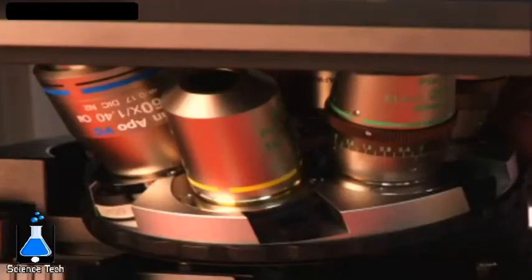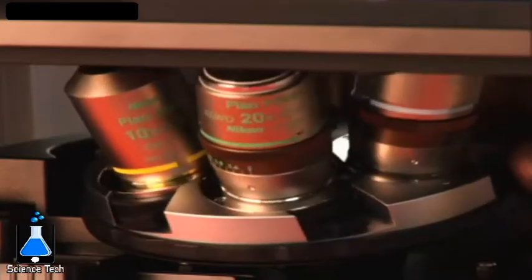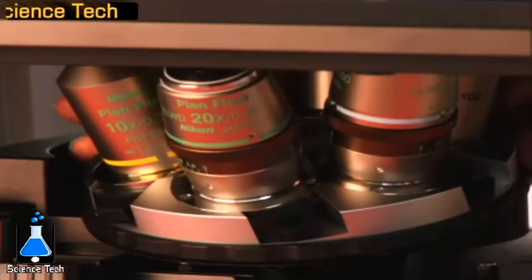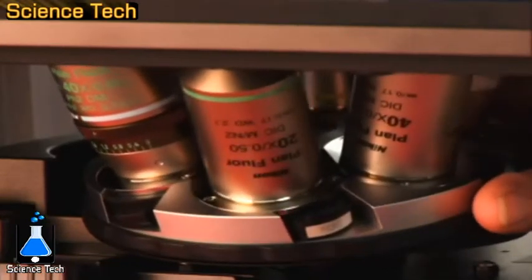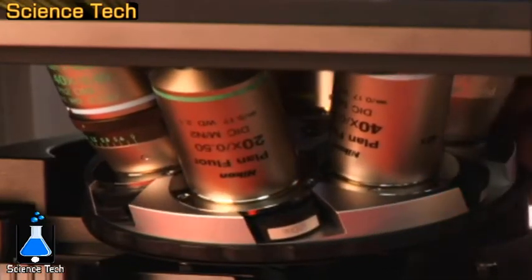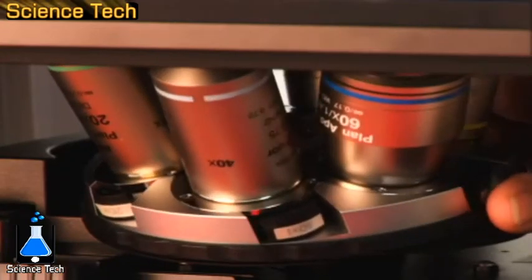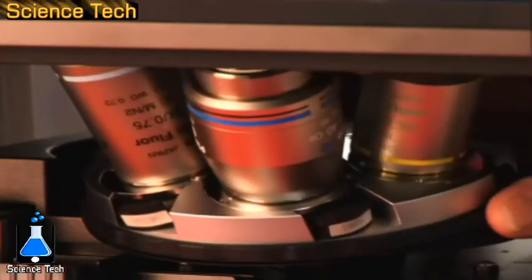The objectives are responsible for most of the magnification and resolution of the microscope. They are mounted on a rotated nose piece in such a way that as they are switched, the focal plane stays the same, a property referred to as para-focality.